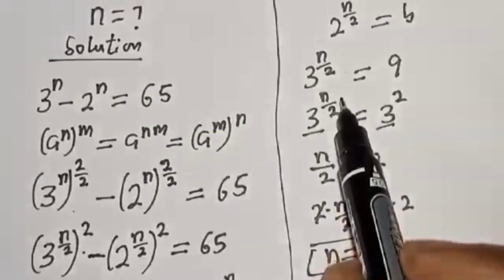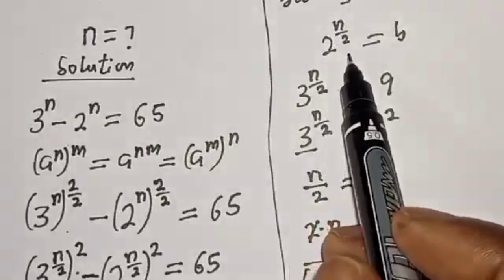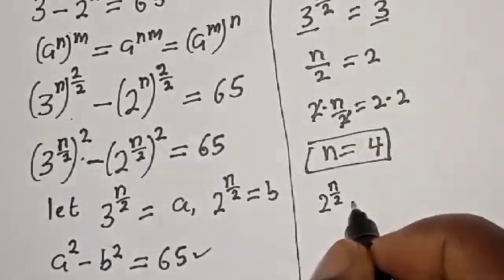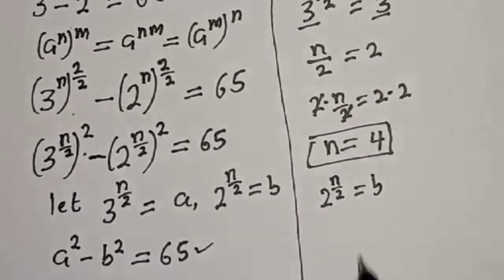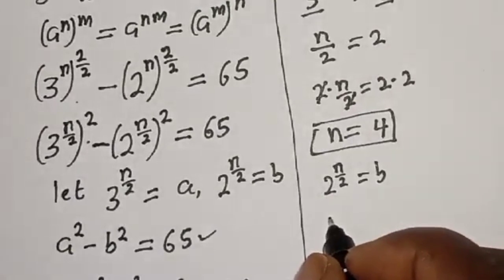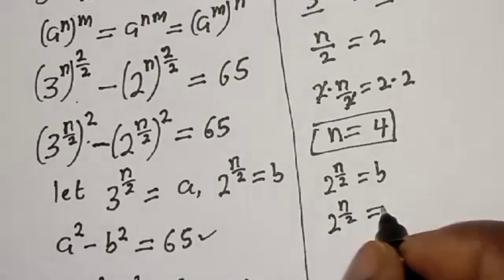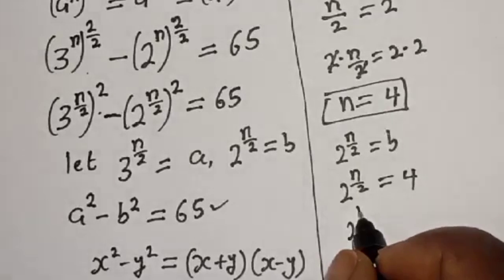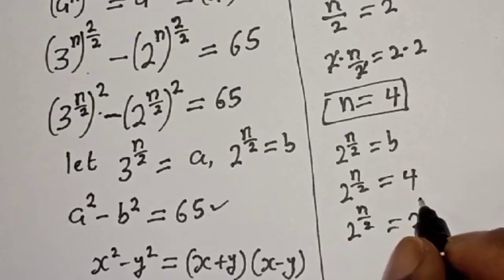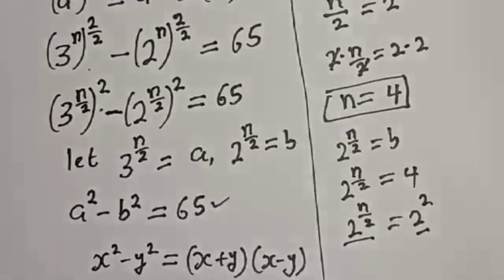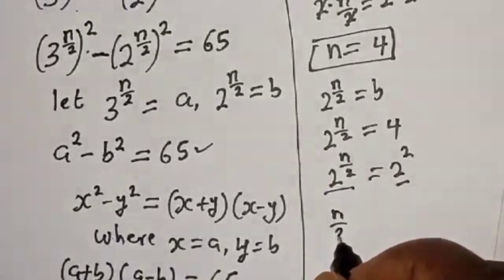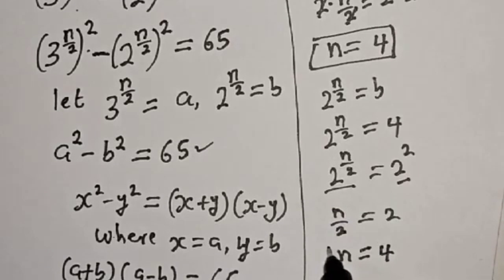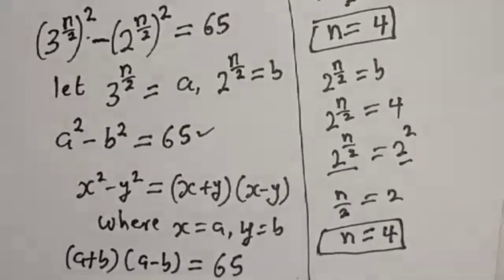Also, let's check using B. Since 2 raised to power (n over 2) equals B equals 4, we have 2 raised to power (n over 2) equals 4, which is 2 squared. With the same base 2, n over 2 equals 2, so n equals 4 when you cross multiply. This confirms the value of n is correct.